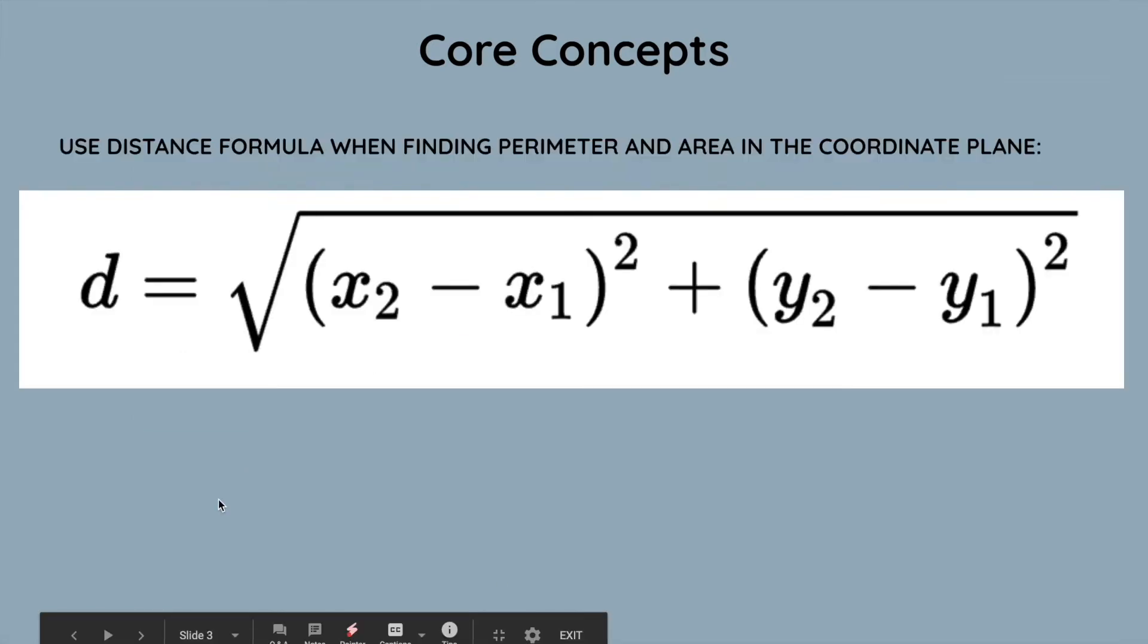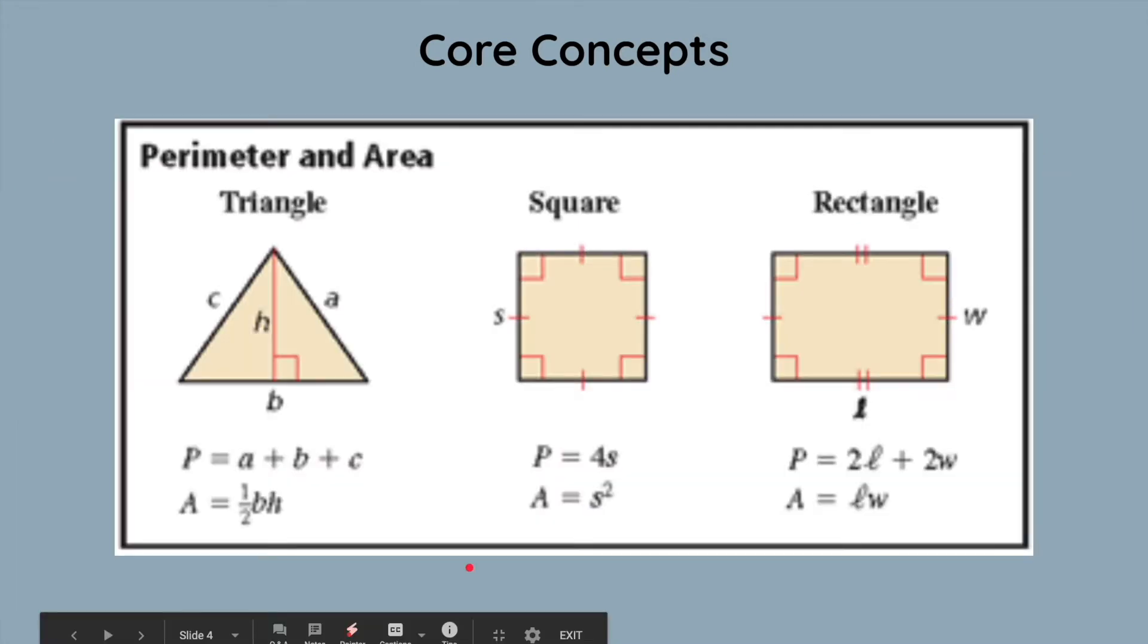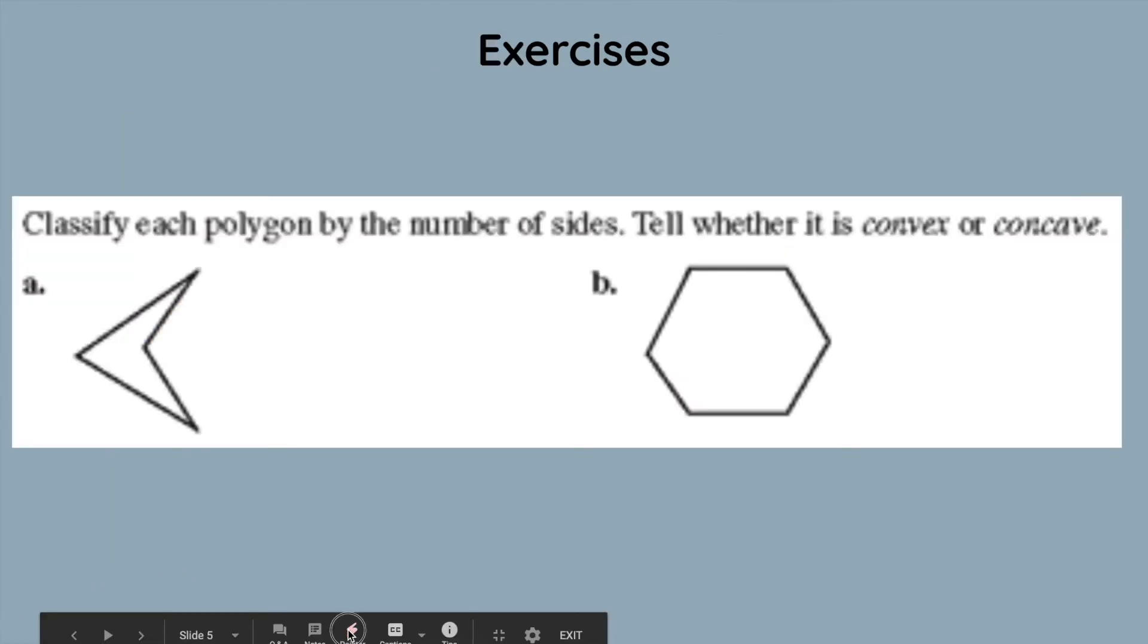Next, we have the distance formula, which is used when finding perimeter and area in a coordinate plane. It is d equals square root of x2 minus x1 squared plus y2 minus y1 squared, and it's best to just memorize this equation because it will be put into use in our future problems. Some reminders from algebra, we just have the perimeter and area of a triangle, square, and rectangle. Now, on to some exercises.